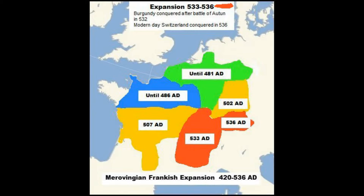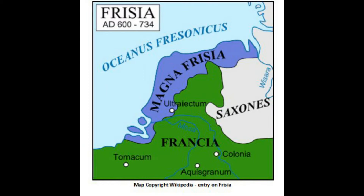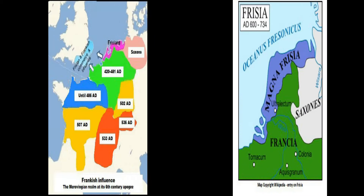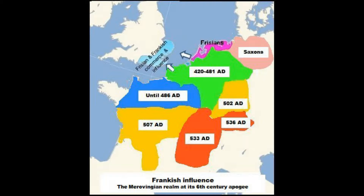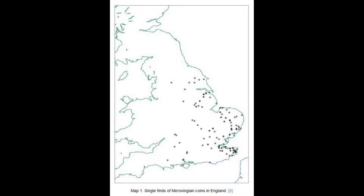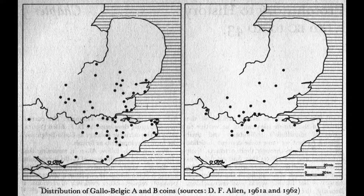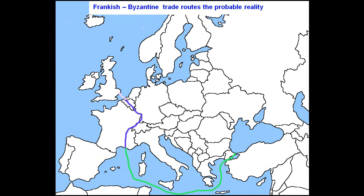During the English Dark Ages the Franks were the strong regional power and the Frisian kingdom of Magna Frisia was the secondary regional power. Both definitely meddled in the affairs of East Anglia, Kent and southern England during the 5th, 6th and even perhaps the 7th century AD. This can be seen by the distribution of early Merovingian coins in southeast England, which have almost the same distribution pattern as pre-Roman occupation Belgae coins from the continent.